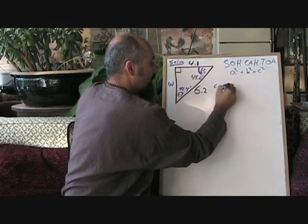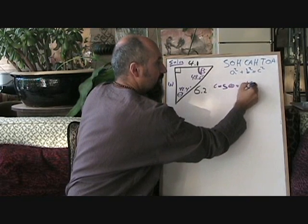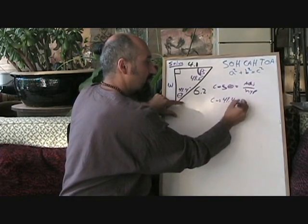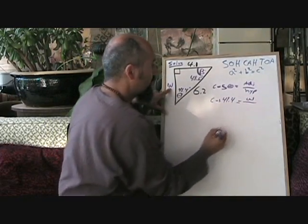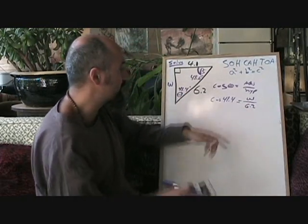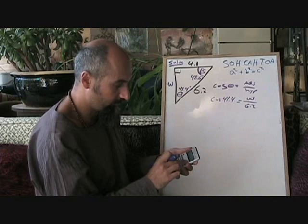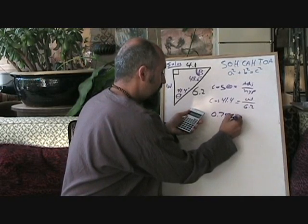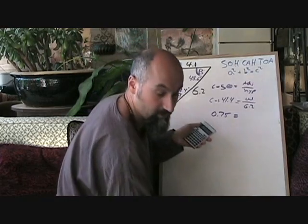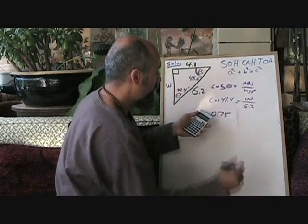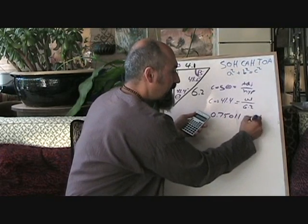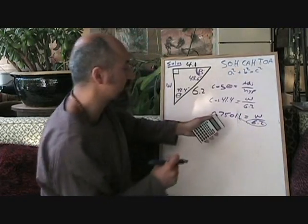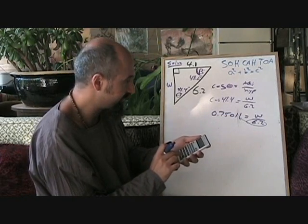We're going to go cos theta is equal to adjacent over hypotenuse. So theta we already know, which is cos 41.4, is equal to adjacent, which is W, over hypotenuse, which is 6.2. So you're going to go cos 41.4, and you're going to take the cos of it because that's what that means. That's going to give you 0.75011 is equal to W over 6.2. And the way you get W by itself now, you cross multiply. So you go 0.75011 times 6.2.